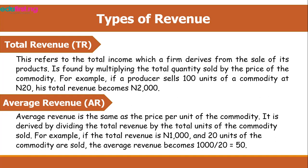Average revenue is the same as the price per unit of the commodity. It is derived by dividing the total revenue by the total units of the commodity sold. For example, if the total revenue is 1000 naira and 20 units of the commodity are sold, the average revenue is 1000 naira divided by 20 units, which gives 50 naira.